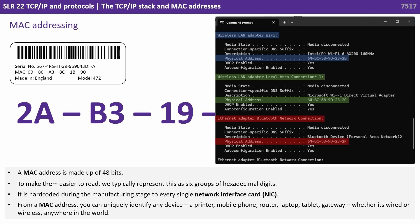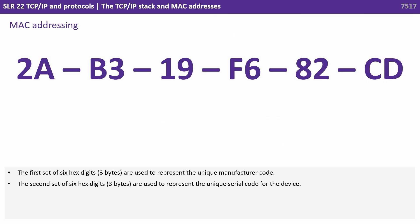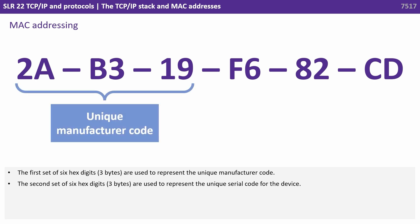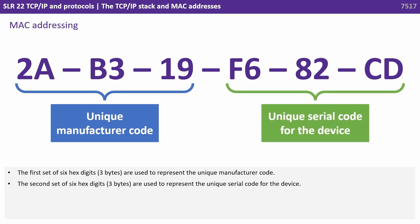From a MAC address you can uniquely identify any device — a printer, mobile phone, router, laptop, tablet, or gateway — whether wired or wireless, anywhere in the world. The first set of six hex digits (three bytes) represent the unique manufacturer code. The second set of six hex digits represent the unique serial code for the device.